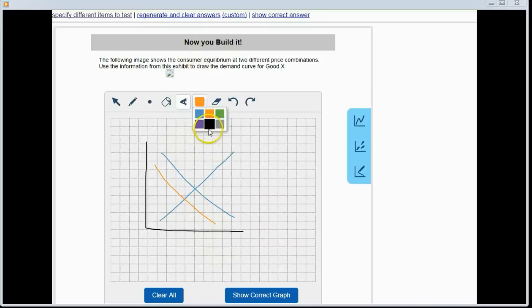They can label their work. This is their price. This is their quantity.